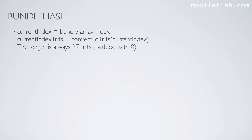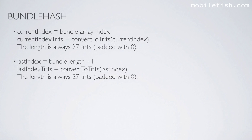The bundle array index is an integer and needs to be converted to trits. The length is always 27 trits. If it is not, it is padded with zeros. The last index is the bundle length minus 1. The last index is also an integer and needs to be converted to trits, with a length of always 27 trits, padded with zeros if needed.